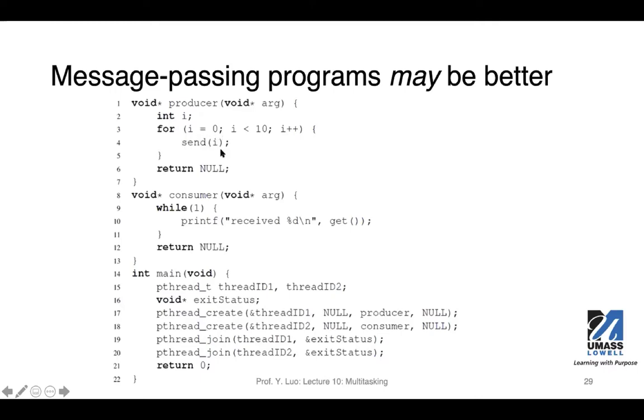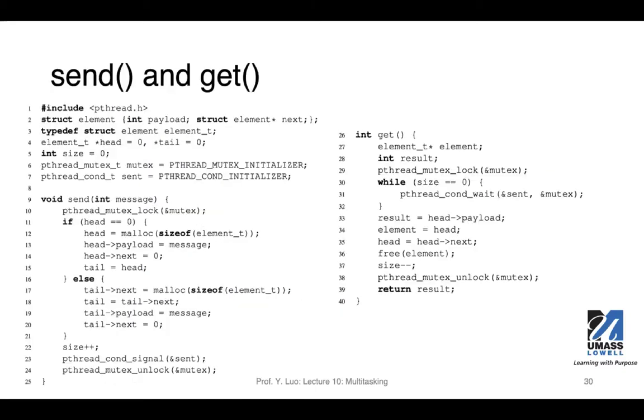But in these thread functions, the main distinction from the earlier design is this send function and this get function. The send function and get function are the ways we pass the variables between these instances. We don't have really the shared variable that we have to protect. Instead, we use send and receive, which underneath will build a channel to ensure the passing of these variables.